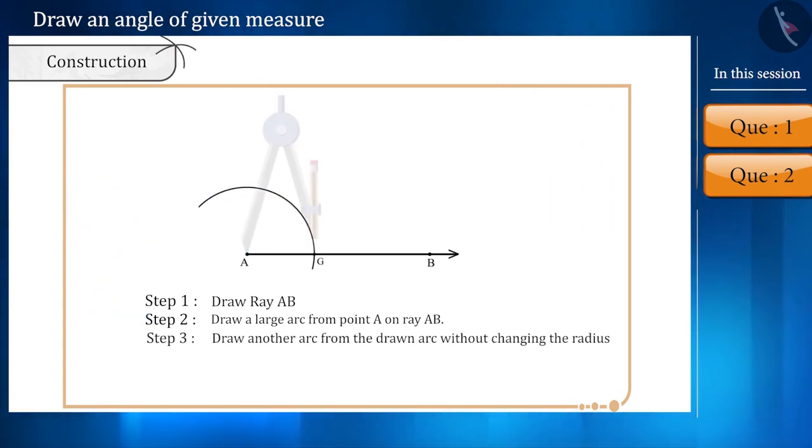Now, without changing the radius, from this point of intersection, draw an arc in such a way that it intersects the arc drawn from point A at D.